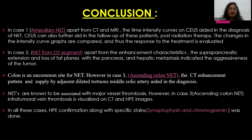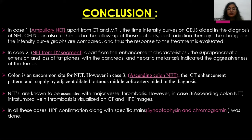In conclusion, for Case 1 — the ampullary NET — time intensity curves derived on contrast-enhanced ultrasound added value to CT and MRI in diagnosing the NET. CEUS can also be used in follow-up post-radiation therapy, where changes in time intensity curves can indicate treatment response, potentially excluding patients from unnecessary radiation via CT or PET. For Case 2, the D2 segment NET — the suprapancreatic extension, loss of fat planes with the pancreas, and hepatic metastasis indicated the aggressiveness of the tumor, in addition to the enhancement characteristics.